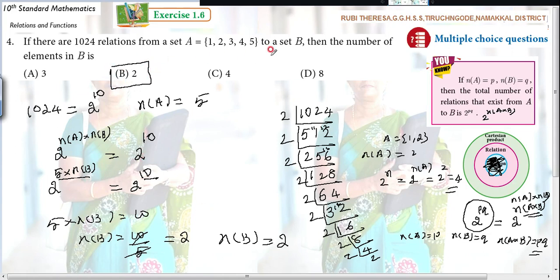Do you follow? The cardinal number is what? They are asking, then the number of elements in B. Number of elements in B is 2. You should be very careful about this. While they are asking relation, you have to write 2 to the power of PQ because relation is a subset of a Cartesian product. From this Cartesian product, you can write the relations.